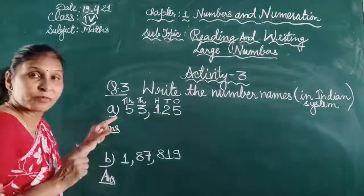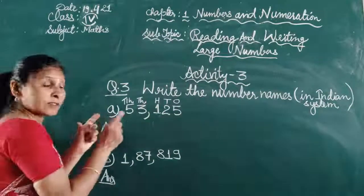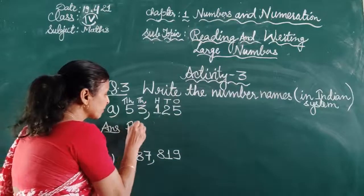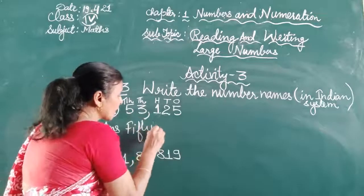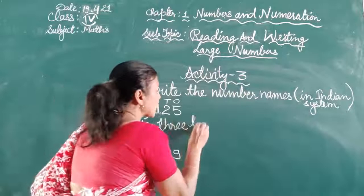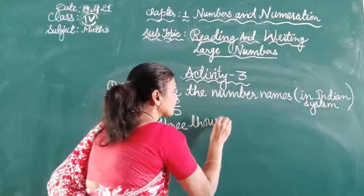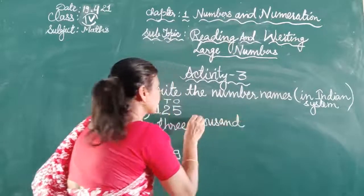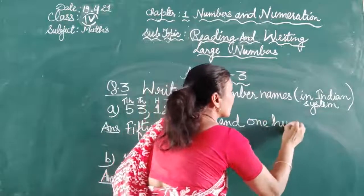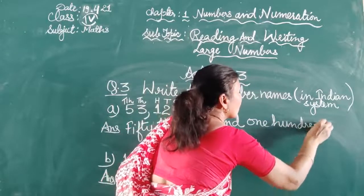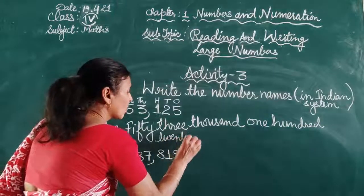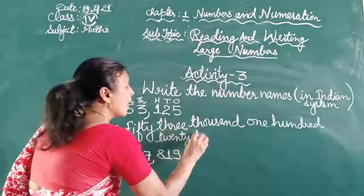We write this number name in words step by step: fifty-three thousand, one hundred, twenty-five.